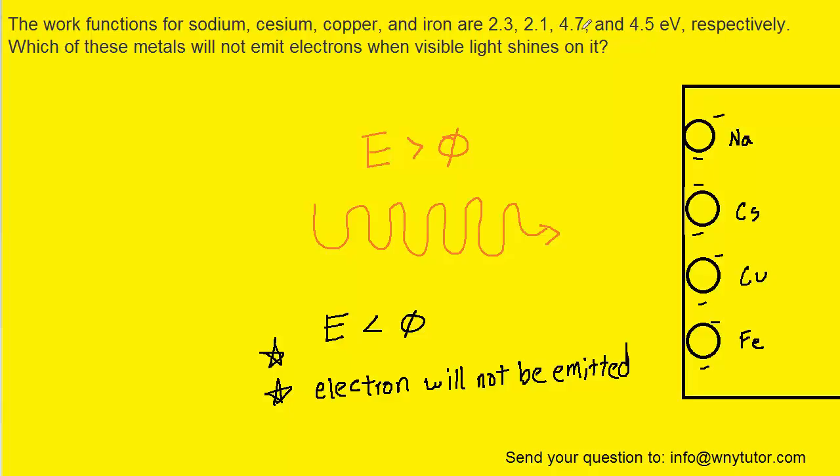The work functions of each of the four atoms are given to us. What we have to do is calculate the amount of energy that's incident on this metal surface. The energy of an incident photon is equal to Planck's constant multiplied by the speed of light divided by the wavelength of that incident radiation.